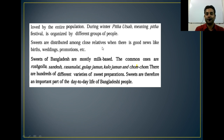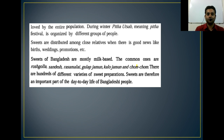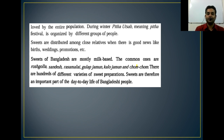Sweets are distributed among close relatives when there is good news, like births, weddings and promotions. So we distribute different kinds of sweets at the time of any happy news. Sweets of Bangladesh are mostly milk-based. Common ones are Rasha Gulla, Shandesh, Rasha Malai, Golab Jamun, Kalo Jamun and Chom Chom. There are hundreds of different varieties of sweet preparation. Sweets are therefore an important part of the day-to-day life of Bangladeshi people.